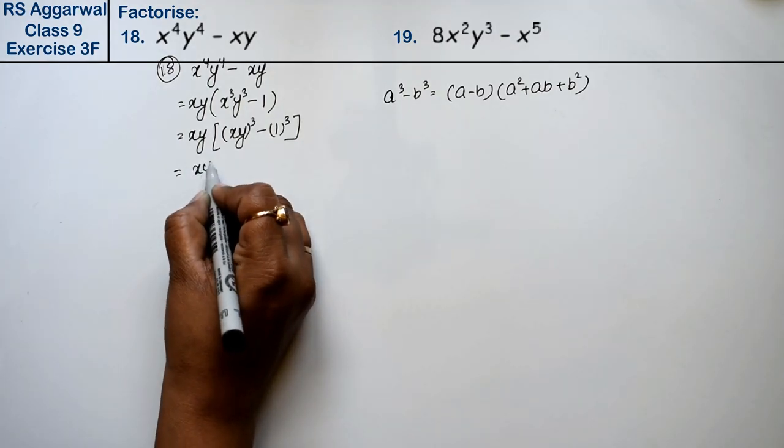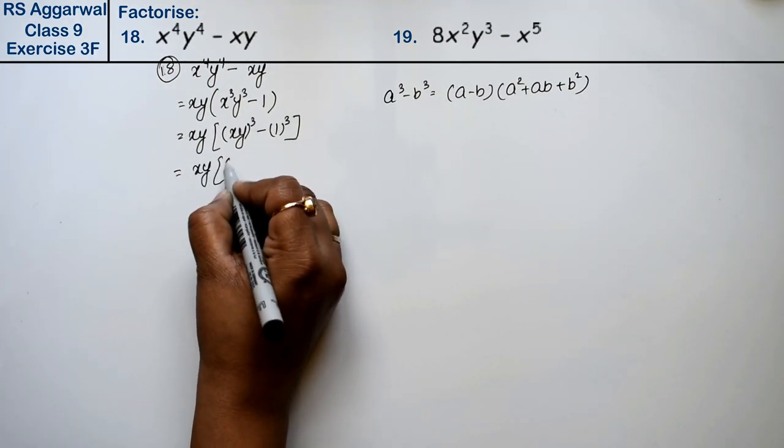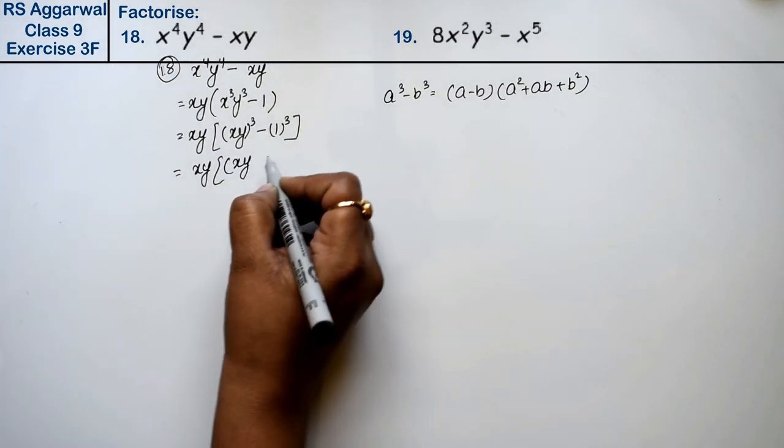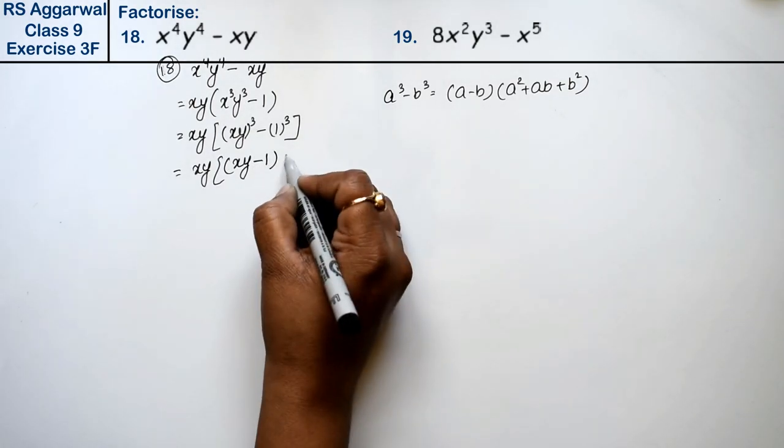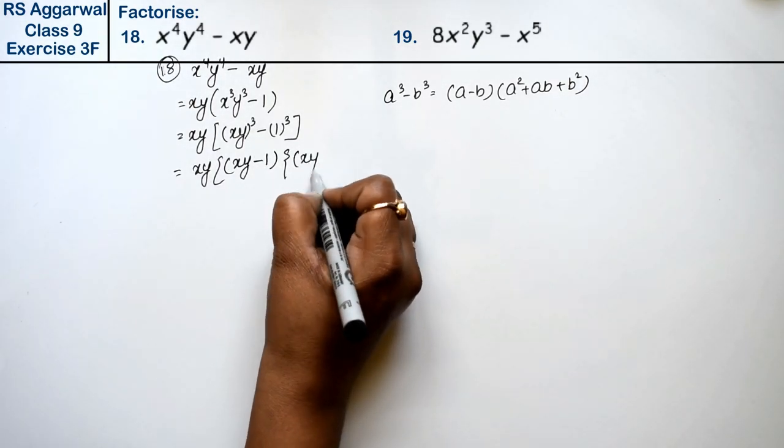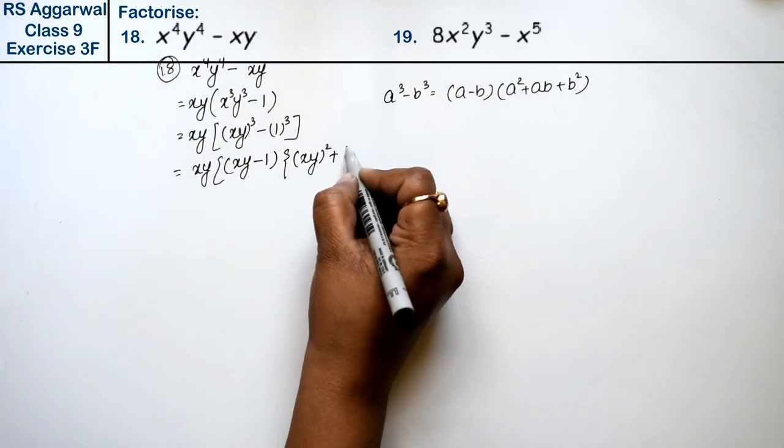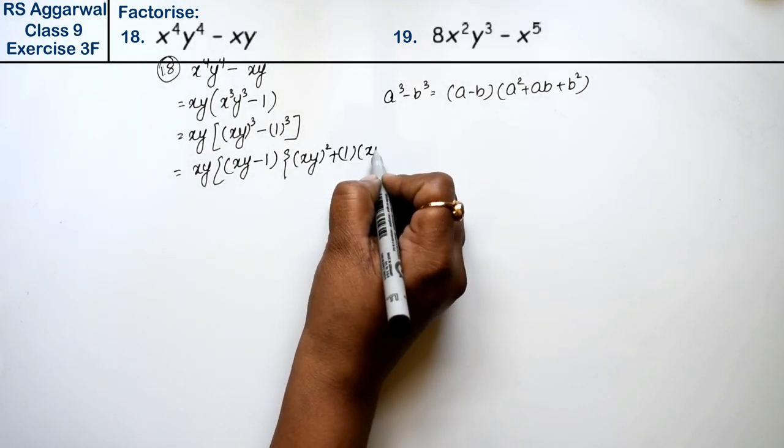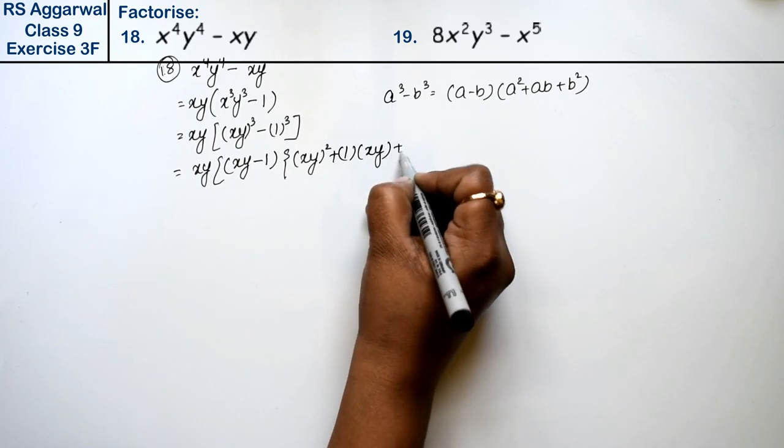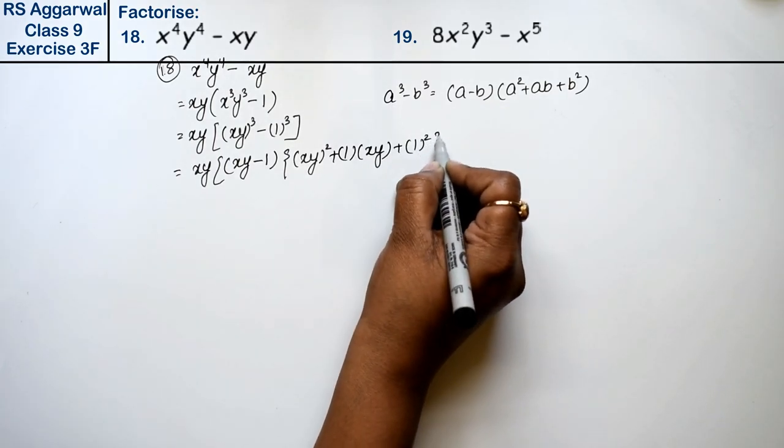So what is xy? That means xy minus 1, xy's whole square plus 1 into xy plus 1's whole square.